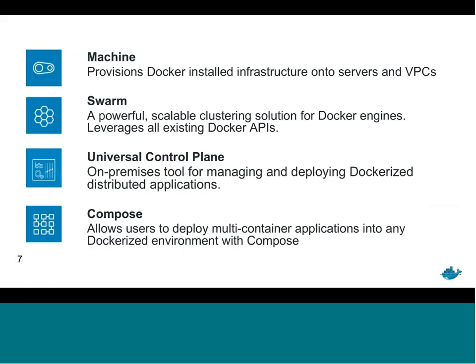Docker Machine is the technology that provisions Docker-installed infrastructure on bare metal servers or within VMs. Swarm is our tool for clustering Docker engines, and it's embedded into our commercial product called Universal Control Plane. Universal Control Plane is our on-premises solution for managing, deploying, and scaling applications across Dockerized node clusters. Docker Compose is also built into Universal Control Plane and allows you to deploy multi-container applications.